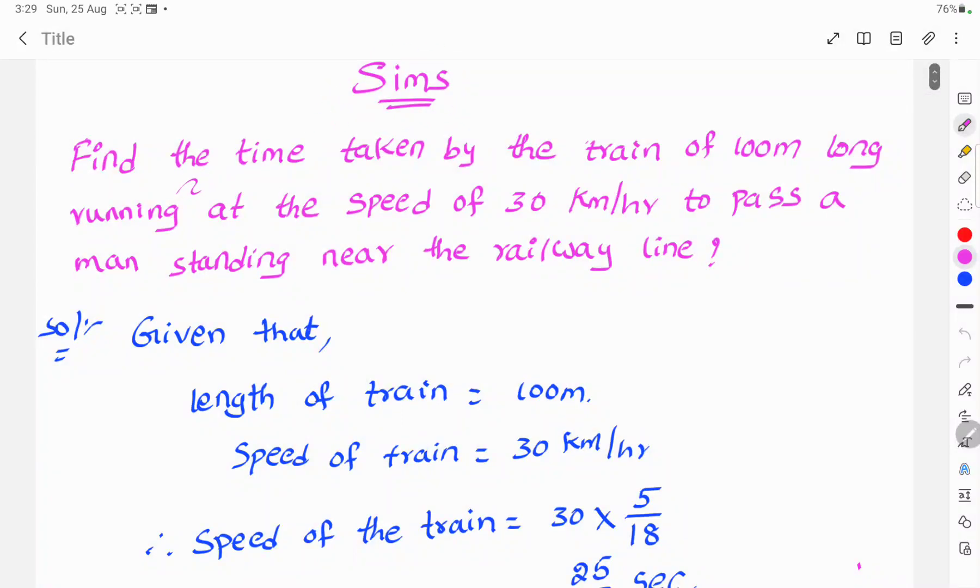Today's topic: find the time taken by the train of 100 meters long running at the speed of 30 kilometers per hour to pass a man standing near the railway line.